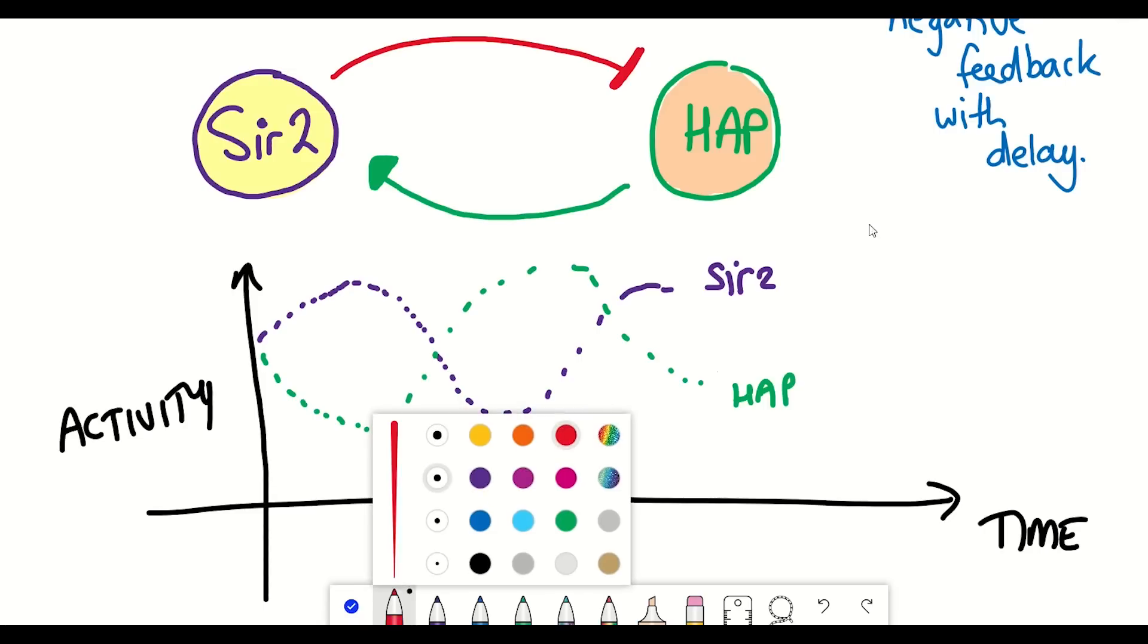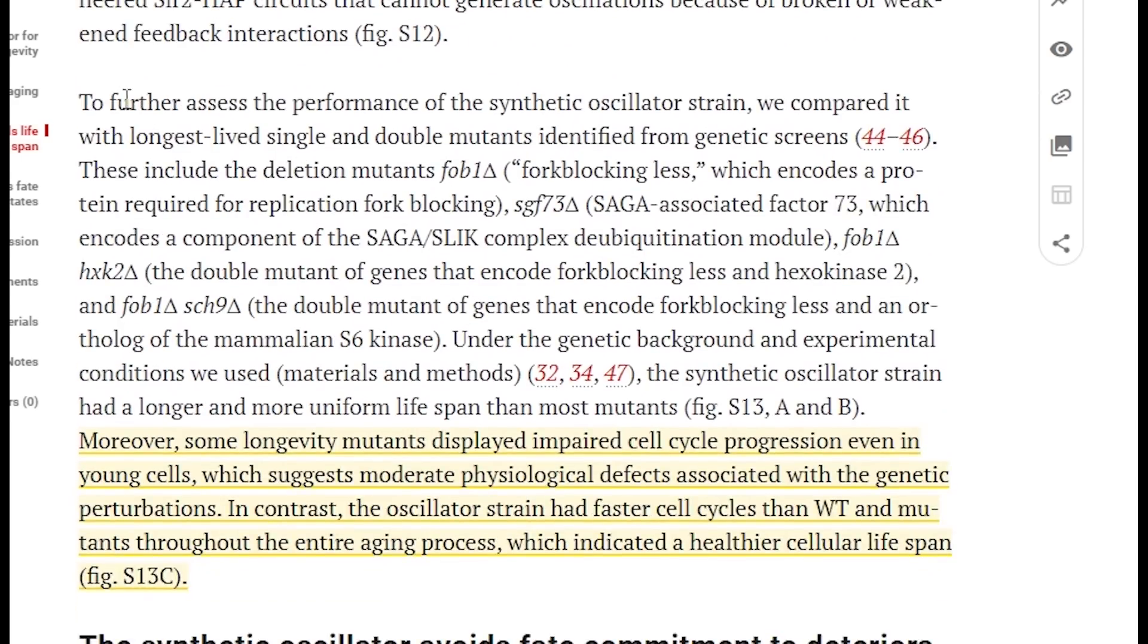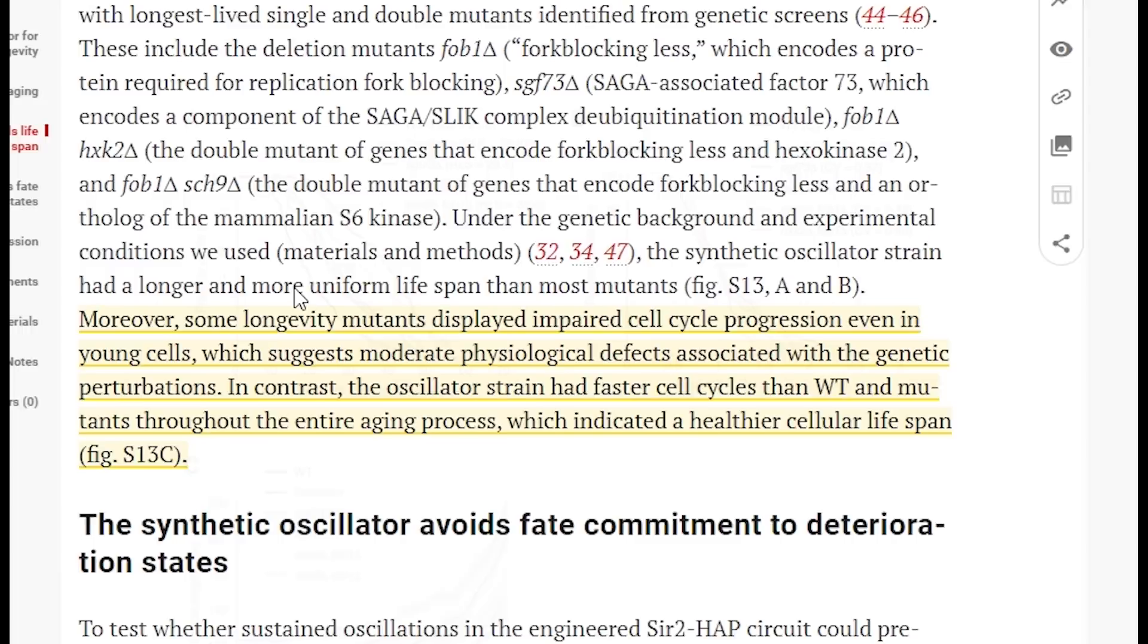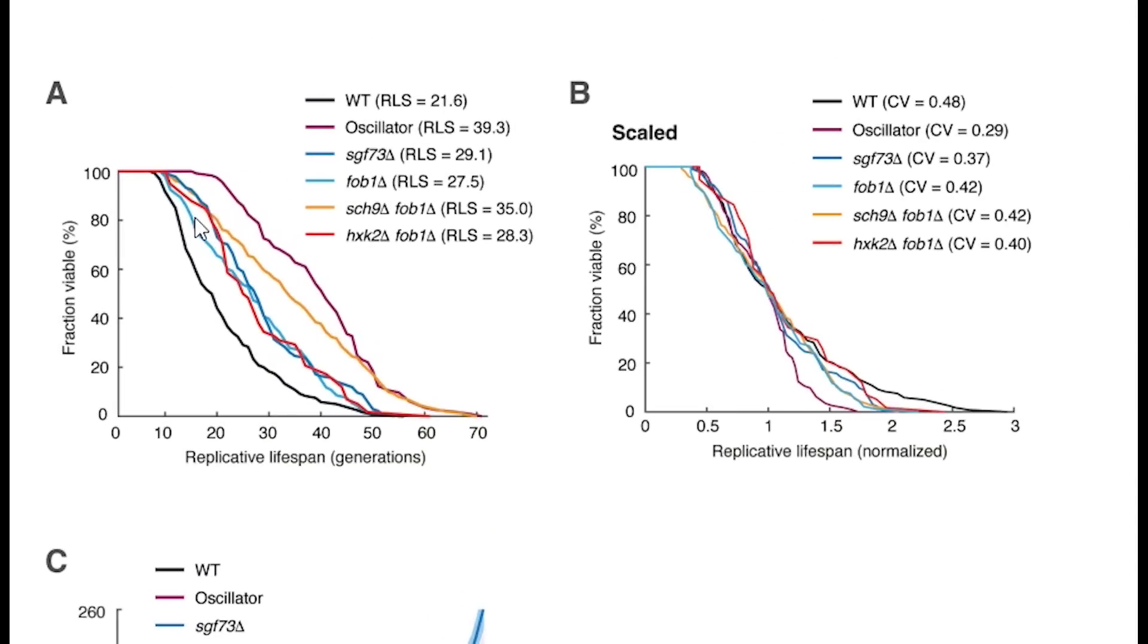Now an interesting question that was studied in this paper is how does it compare to known long-lived mutations in yeast? Well if we take a look at this figure here we can see that this oscillatory modification matches, if not outperforms, some of the currently known long-lived strains. Partly because there is less variance within the oscillatory strain, they actually were able to build such a robust system here.